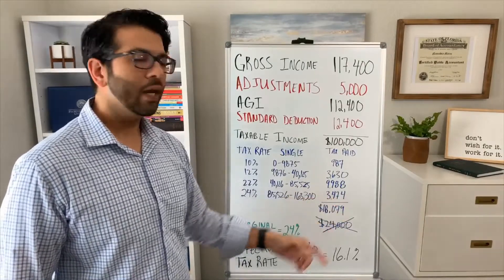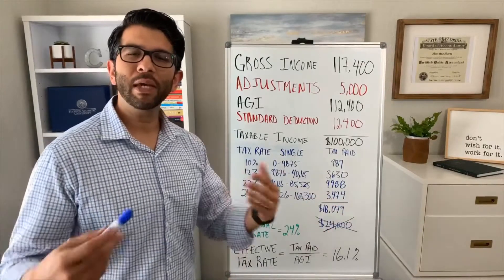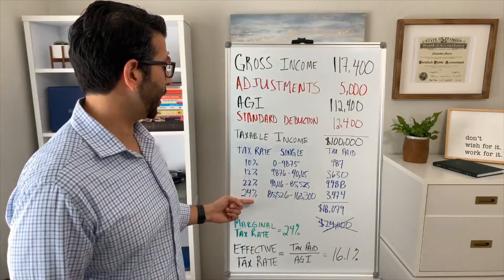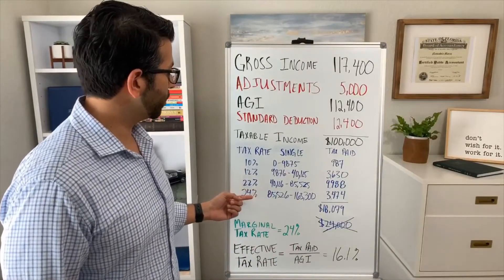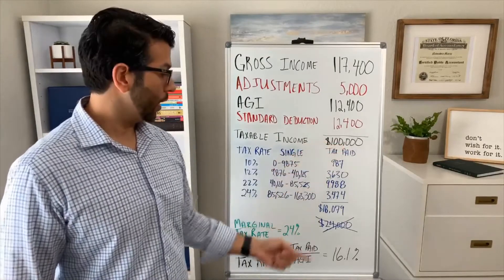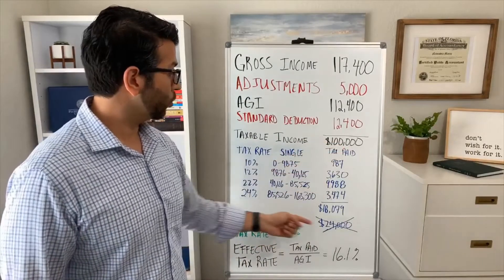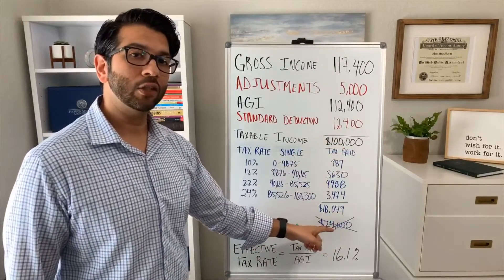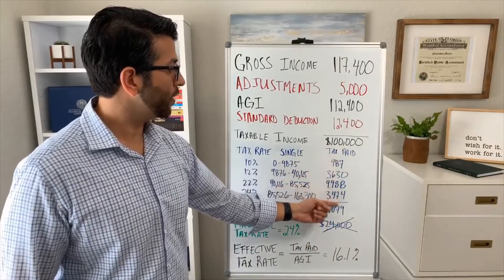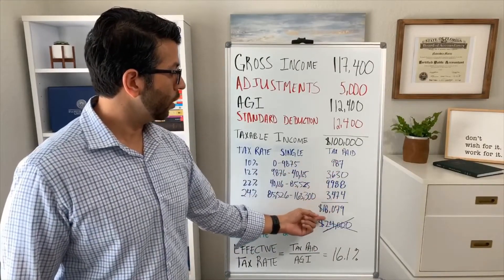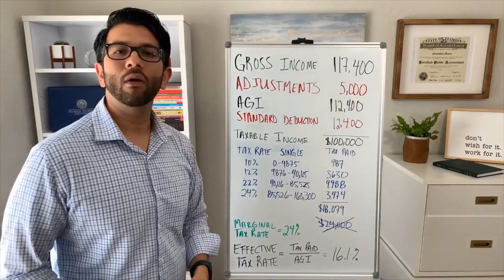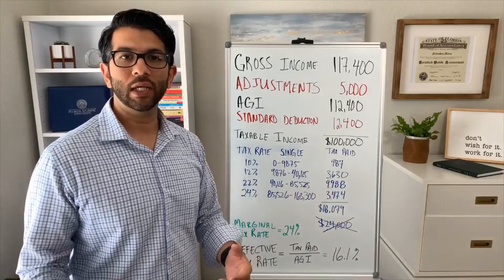There's a big misconception that because I'm in a 24% tax bracket, that must mean 24% times my taxable income equals the taxes I paid. That's incorrect. The taxes you paid are the total of all amounts across each bracket. In this example, the total comes to $18,079.